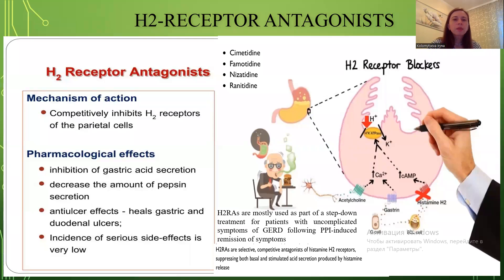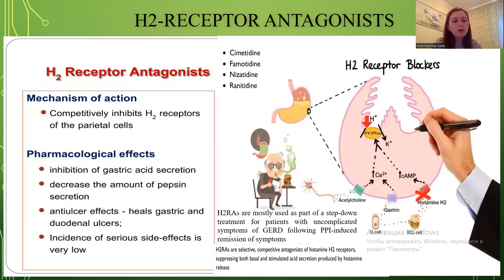The next drug class is H2 receptor antagonists. Their mechanism of action is competitive inhibition of H2 receptors within the parietal cells. Pharmacological effects include inhibition of gastric acid secretion, decreasing pepsin secretion, anti-ulcer effects including gastric and duodenal ulcer treatment. The incidence of serious side effects is very low. Agents include cimetidine, famotidine, nizatidine, and ranitidine.